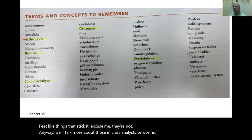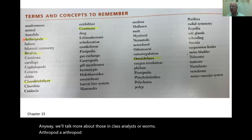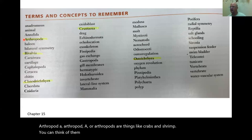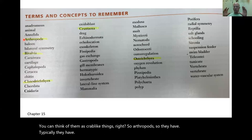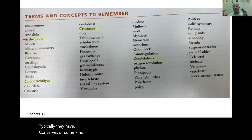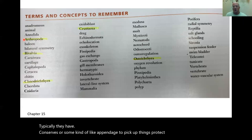Arthropoda, or arthropods, are things like crabs and shrimp. You can think of them as crab-like things. They typically have pincers or some kind of appendage to pick up things and protect themselves. Good examples are shrimp and crabs.